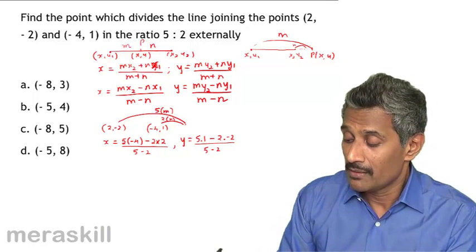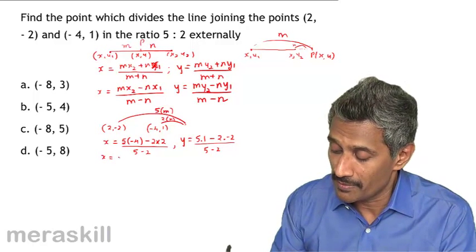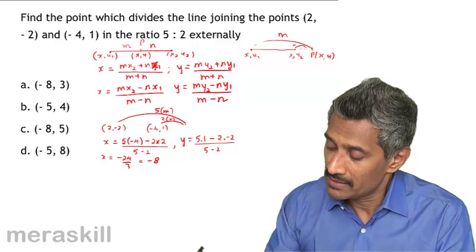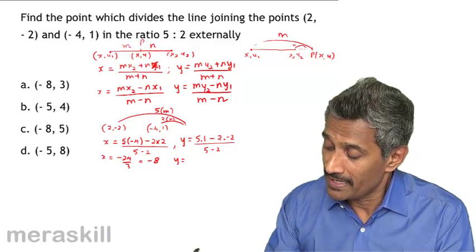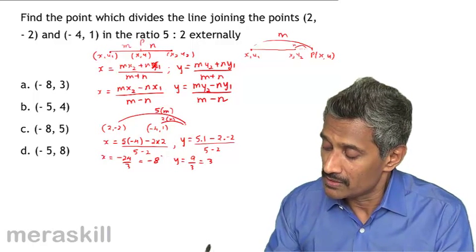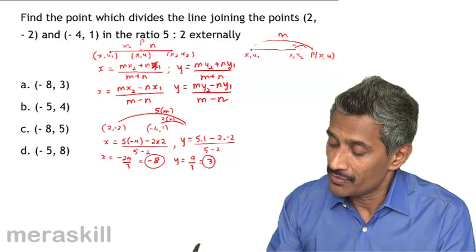This will become -20 minus 4, so it is going to be -24 by 3, which is -8. And this is going to be 5 plus 4, 9 by 3, that is 3. So it is going to be (-8, 3).